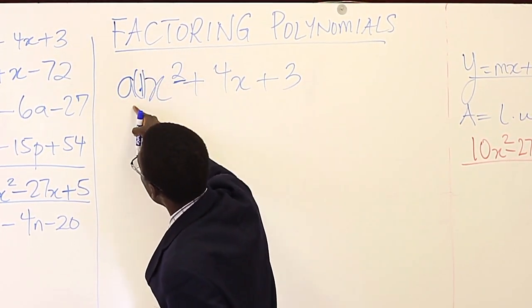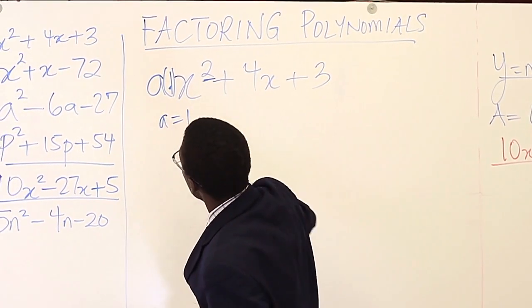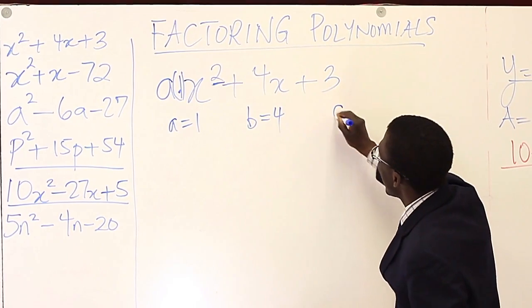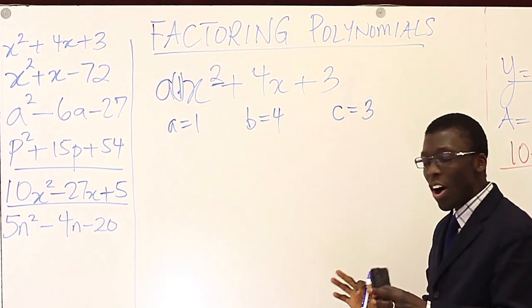So here, 1. So that's a is 1. b is 4. It's the number in front of x. And c is 3. It's the constant.